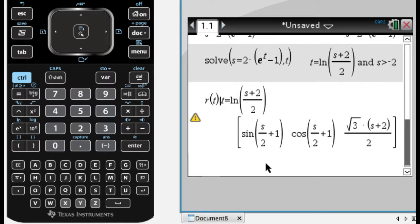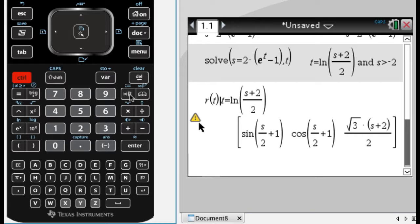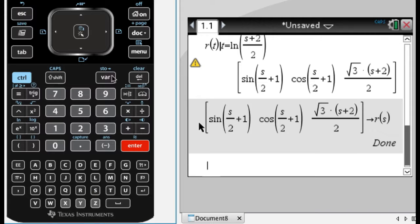So now I have this, so this is actually my arc length parameterization, so what I might do is I'm going to store this as a new function. So control and then store as, well I'm actually just going to store over my previous one, so I'm going to store that as r of s.